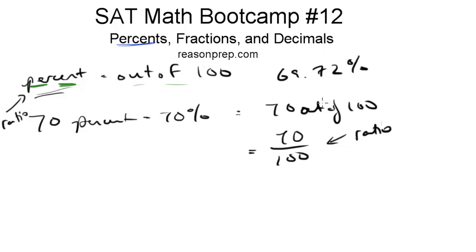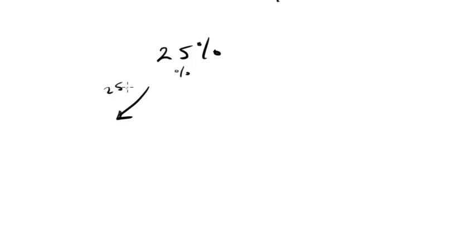So we know a percent is a ratio — simply just out of 100. How do we use percents with fractions and decimals? Let's start with 25%. To go from a percent to a decimal, the easiest way is to move the decimal point over two spaces to the left, giving you 0.25. To go from a decimal back to a percent, you move it the other way — two spaces to the right — and get 25%.